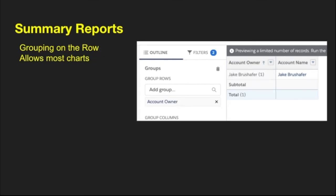Next up is the summary report. This allows initial grouping — you can have multiple groupings, and this also allows charts. This one's grouped by account owner, and any field you have on your report you can group by. You can do up to three groupings in total between rows and columns — for example, three row groups, or two row groups and one column group.